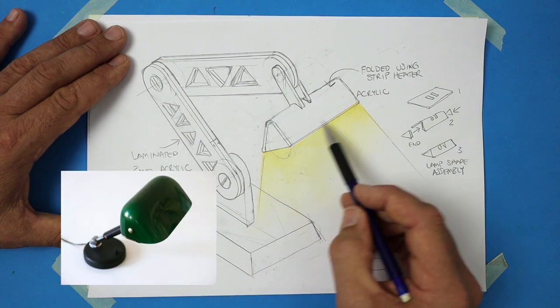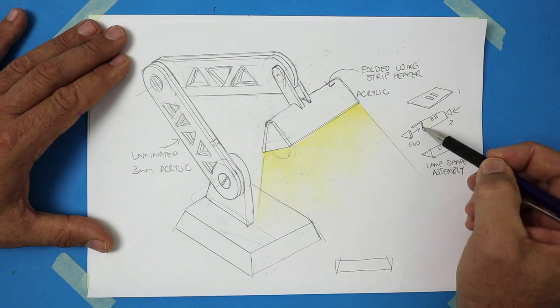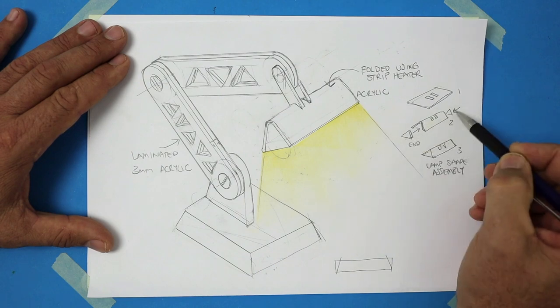Here I've made a version of the classic Bauhaus design, the Banker's desk lamp. I've used a flat piece of acrylic with some laser cut out bits, and I've used one fold and glued some ends in.